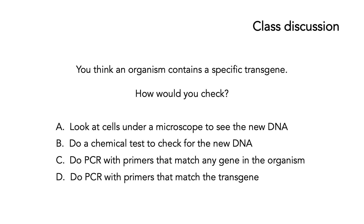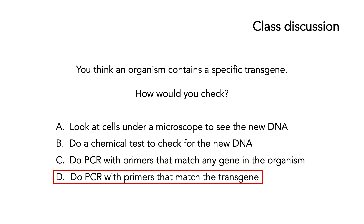Another class discussion. You think an organism contains a specific transgene. How would you check? A, look at cells under a microscope to see the new DNA; B, do a chemical test to check for the new DNA; C, do PCR with primers that match any gene in the organism; or D, do PCR with primers that match the transgene. The correct answer is D — do PCR with primers that match the transgene.